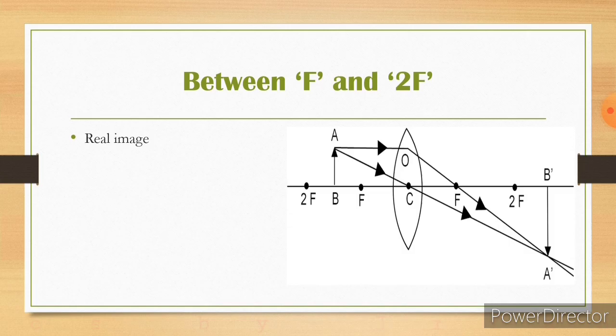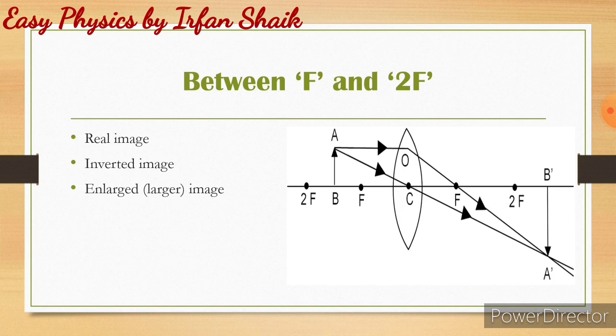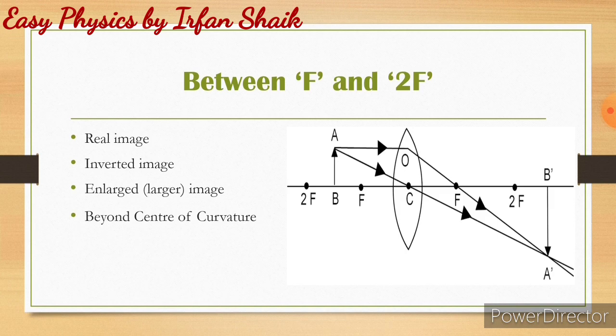The image is real and inverted. It is an enlarged image — larger than the object. AB is the object size and A'B' is the image size; A'B' is clearly larger than AB. This image is formed beyond the center of curvature — A'B' is located beyond 2F. These are the image qualities when the object is placed between F and 2F.